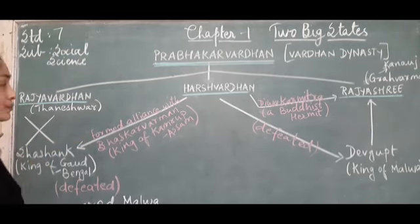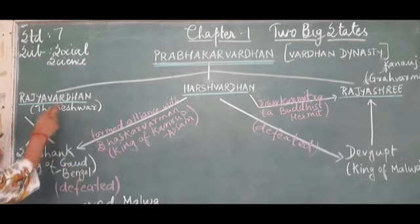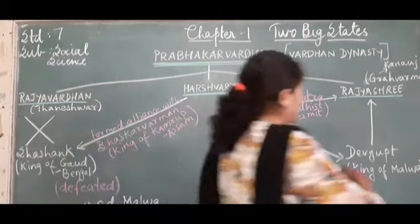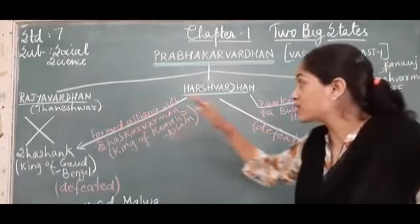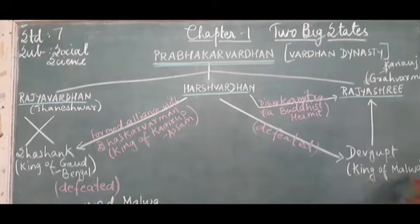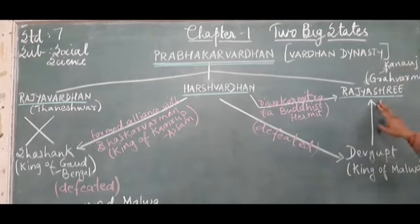Rajya Vardhan was attacked by Shashank, who was the king of Gaur in Bengal. Shashank attacked and killed Rajya Vardhan. On the other hand, Rajyashri, who was the sister of Rajya Vardhan and Harshvardhan, was imprisoned by Devguta, the king of Malwa. Rajyashri was married to Grahavarma who ruled Kanauj, and with him gone, Kanauj was left without a king.